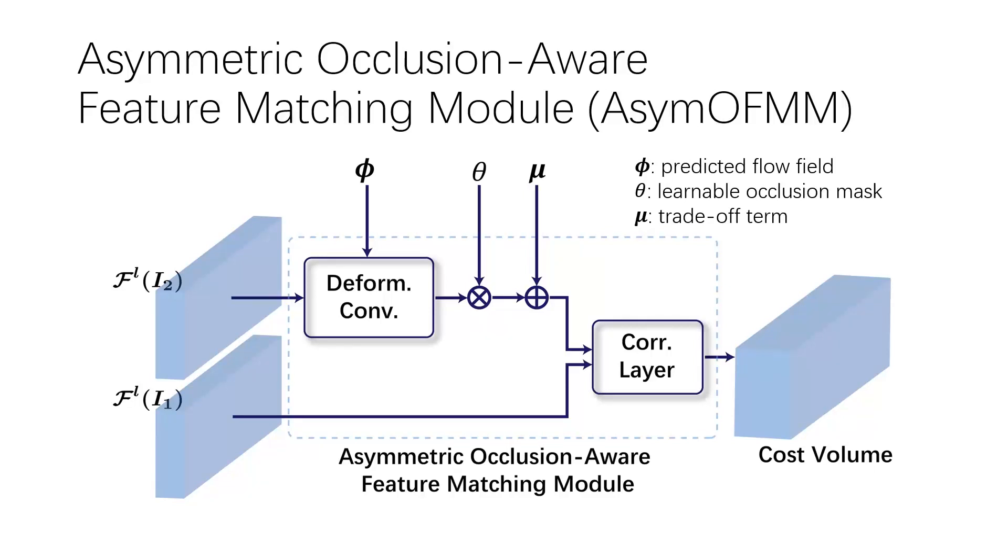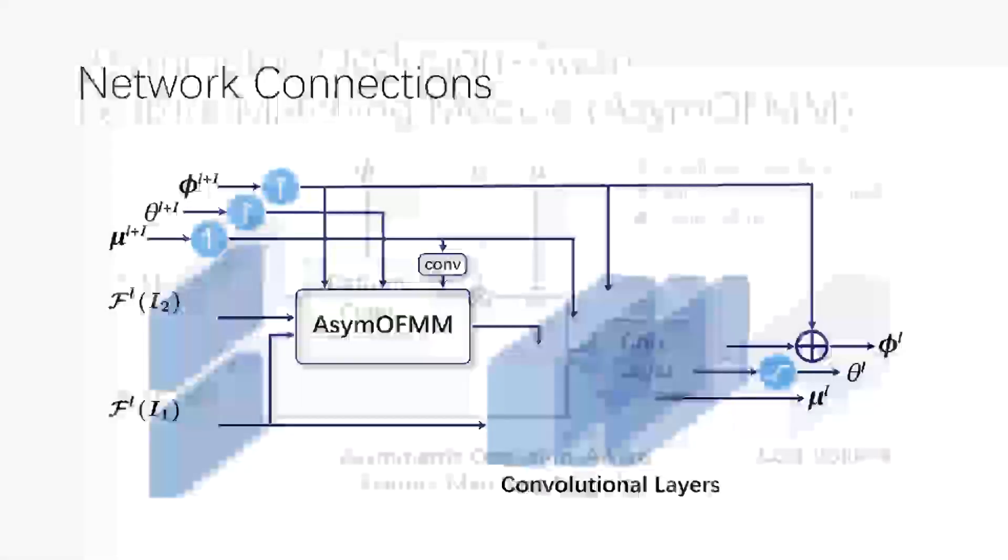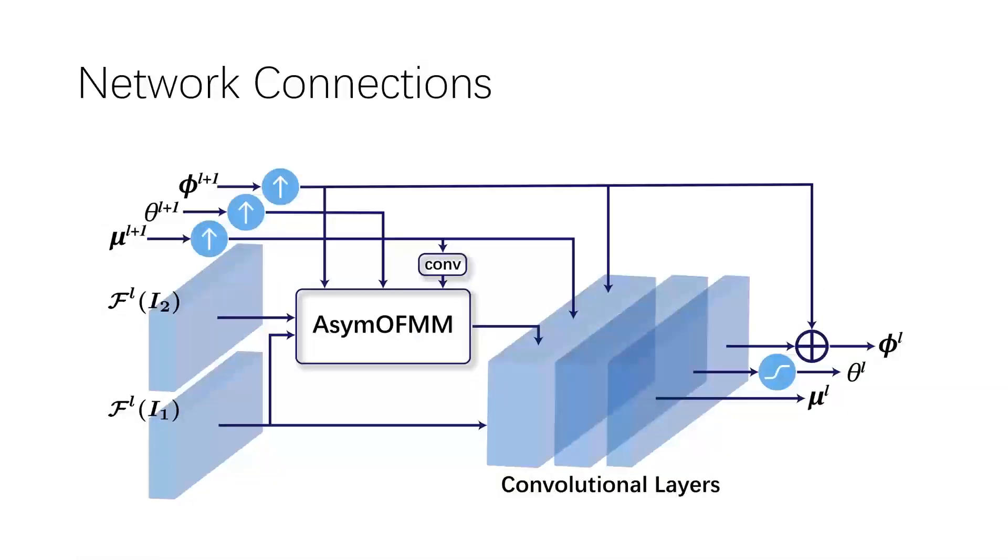This simple asymmetric design leads to considerable performance gains. At each level of the network, the learnable occlusion mask is generated through the sigmoid activation from the previous level, upsampled, and then fed into the asymmetric occlusion-aware feature matching module.